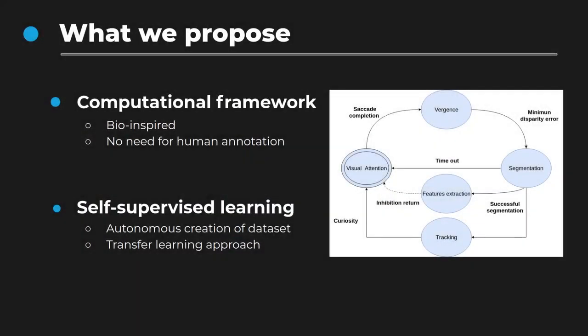In this work, we propose to address this challenge by taking inspiration from how babies learn, using facilitation mechanisms such as visual attention and active vision, to propose a computational framework that can automatically process the raw data from the robot's sensors and use them to perform supervised learning. We take advantage of the transfer learning approach, where deep networks trained on big datasets can be used as generic feature extractors to reduce training time when adapting to new scenarios and objects.